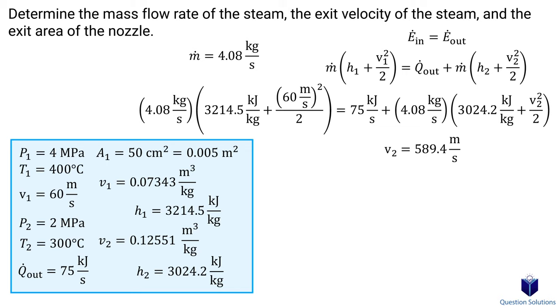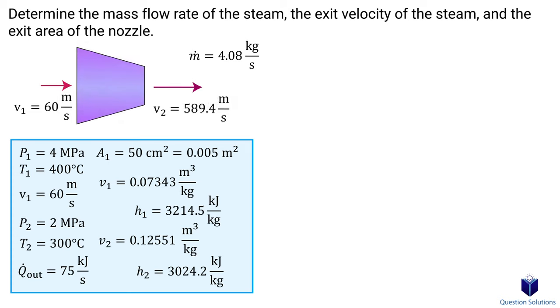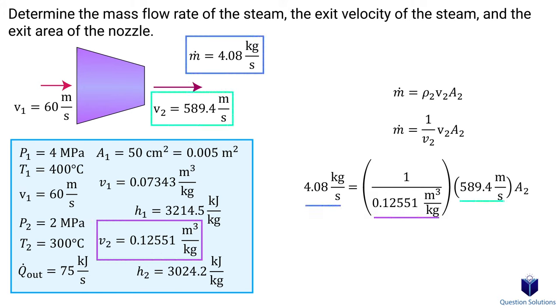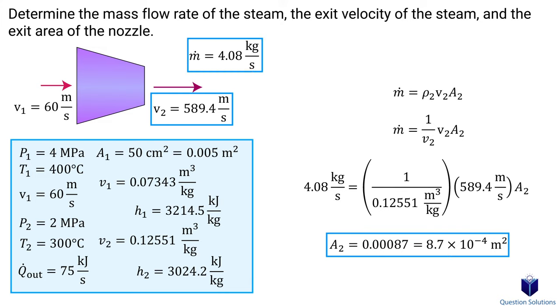Remember that each kilojoule term must be multiplied by 1000 to convert to joules, or you won't get the right answer. For the exit area, we use the mass flow equation, replace density with specific volume, and plug in our known values — including the exit velocity just found — to solve for the exit area. That covers the types of problems you'll face with steady flow nozzles and diffusers. Thanks for watching and best of luck with your studies!